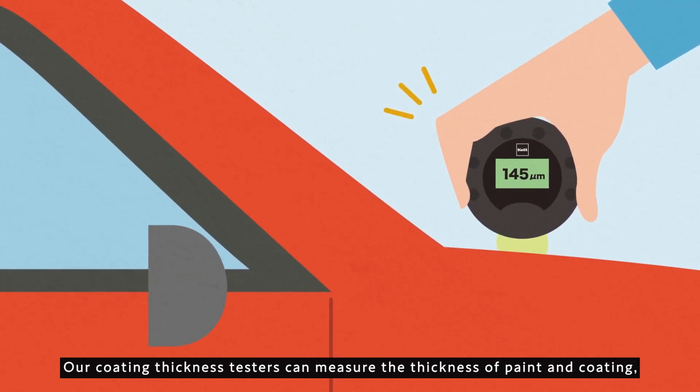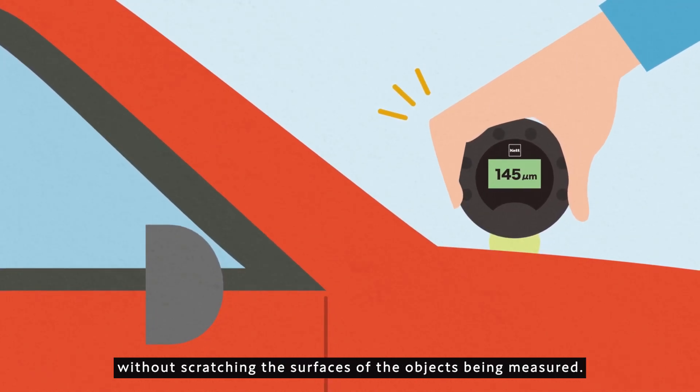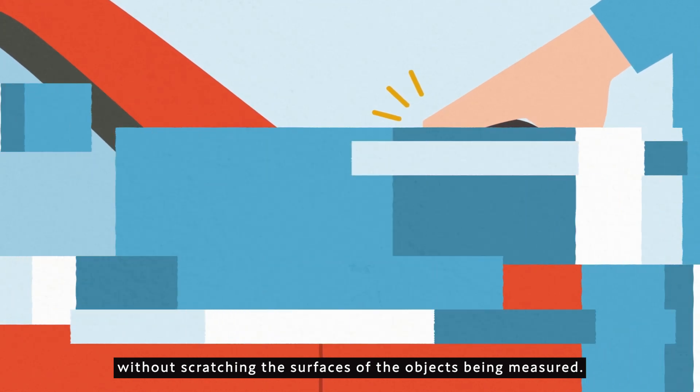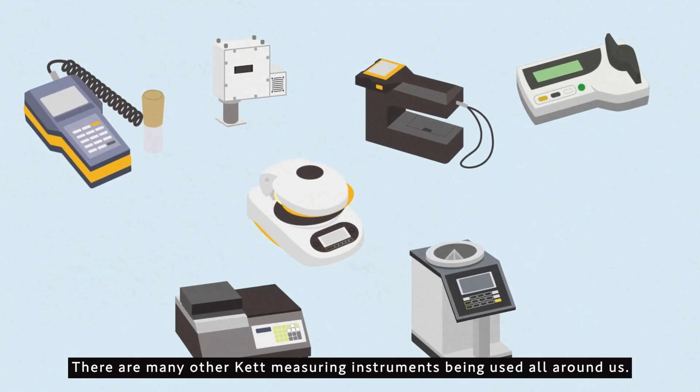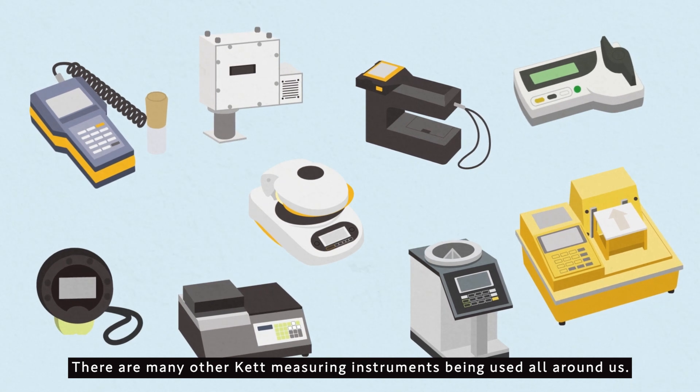Our coating thickness testers can measure the thickness of paint and coating without scratching the surfaces of the objects being measured. There are many other Kett measuring instruments being used all around us.